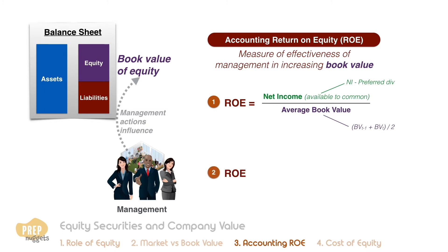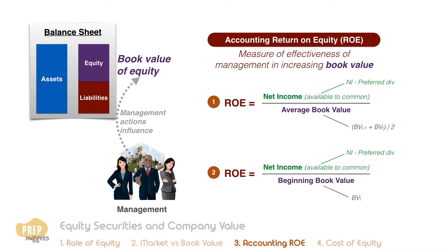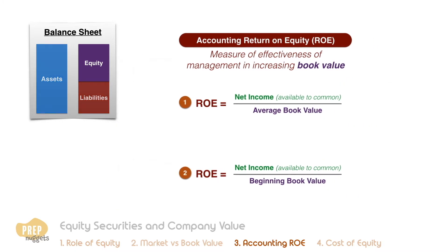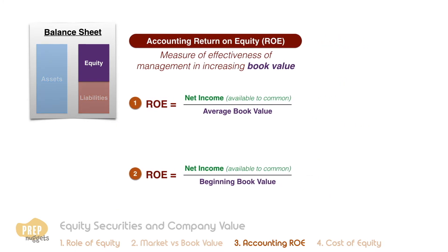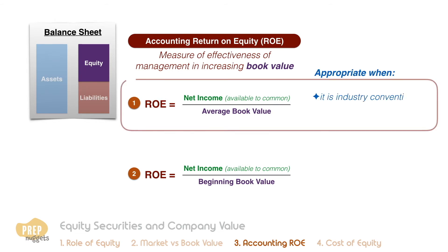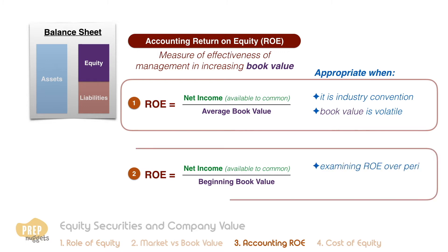ROE can also be calculated using only beginning-of-year book value of equity. The average method is more appropriate when it is the industry convention or when book value is volatile. The beginning-of-year method is more appropriate when examining ROE over a number of periods or when book value is stable.